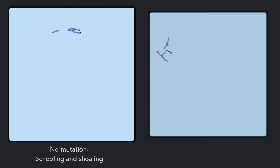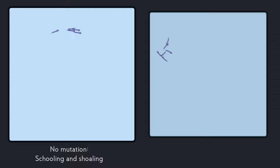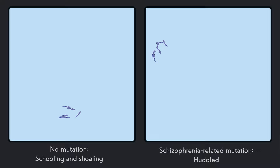Another mutation that had a dramatic effect — essentially the opposite — was by mutation of a gene related to schizophrenia. In this case the fish huddled together. They did not seem to align or move very far apart.